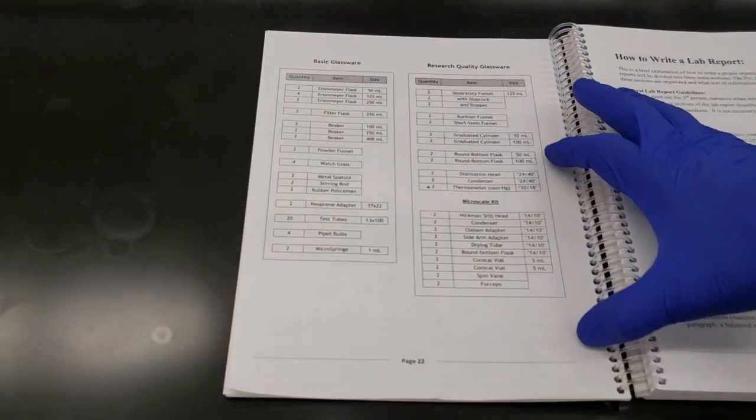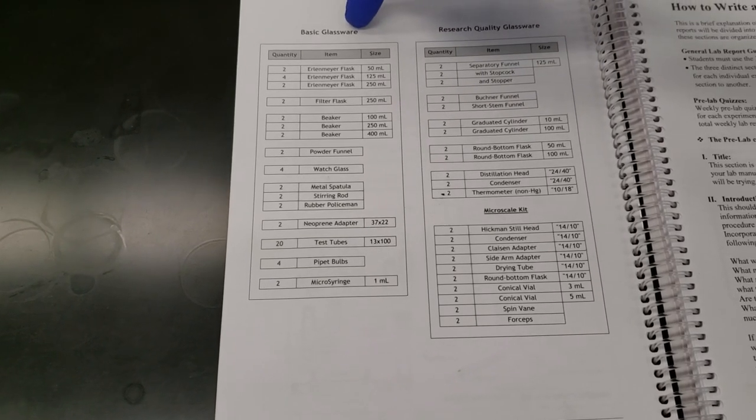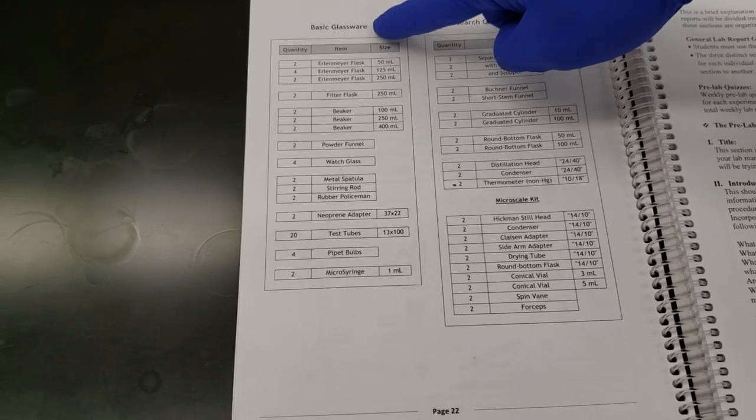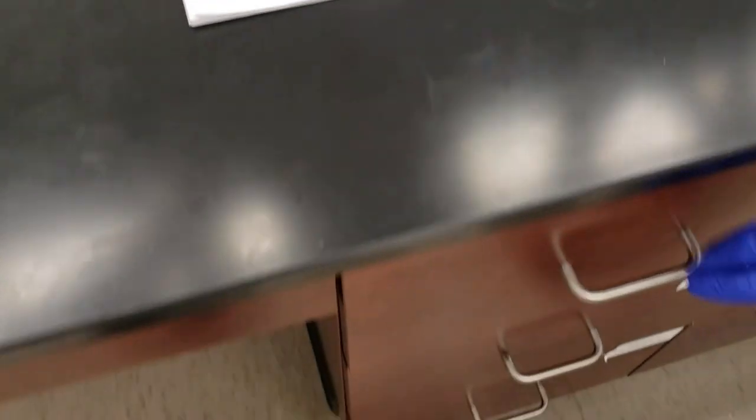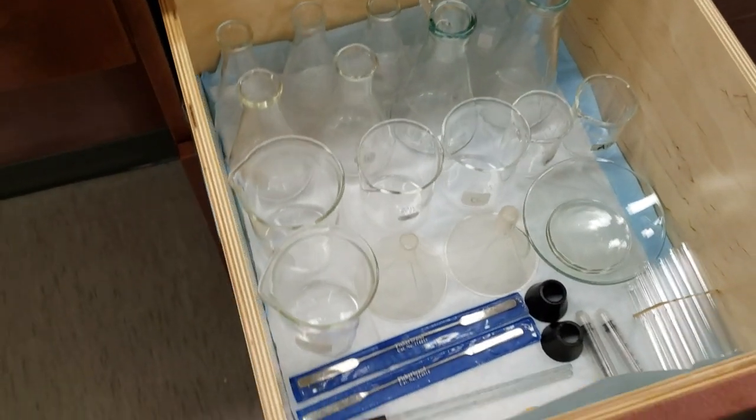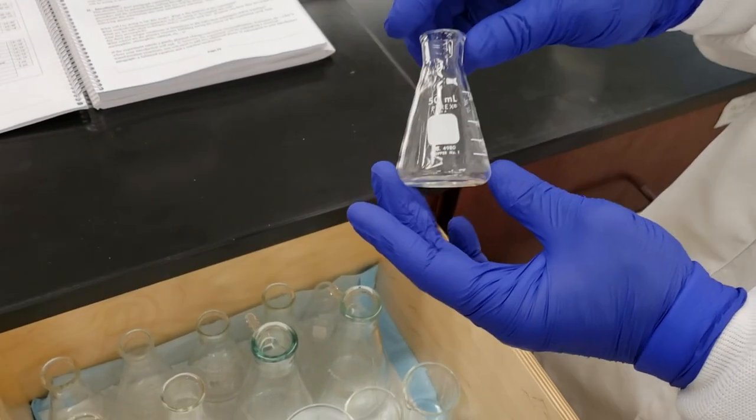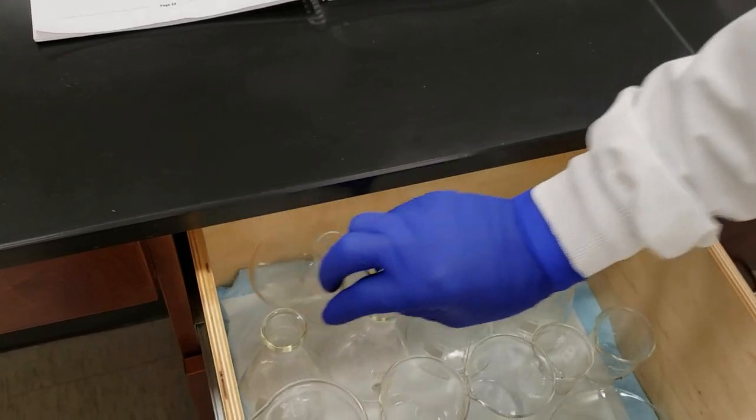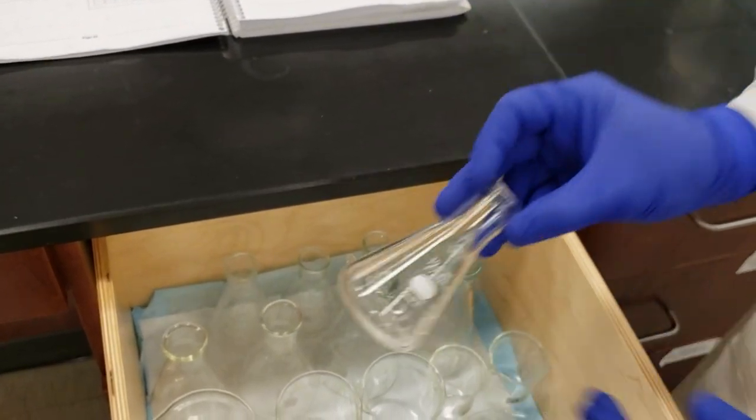If we open our lab manual, we'll find a list of all the glassware present in our drawers. Starting at the top, we have two 50 mL Erlenmeyer flasks, four 125 mL Erlenmeyer flasks, and two 250 mL Erlenmeyer flasks.